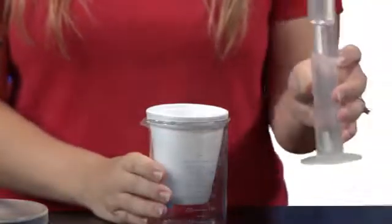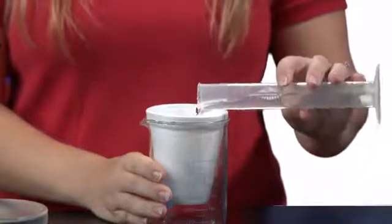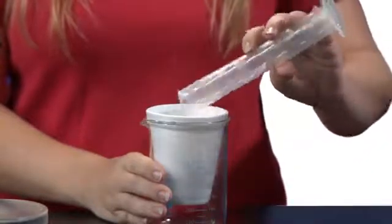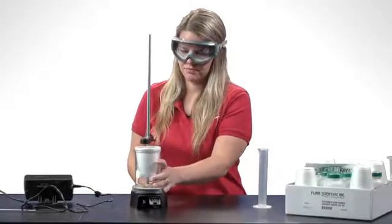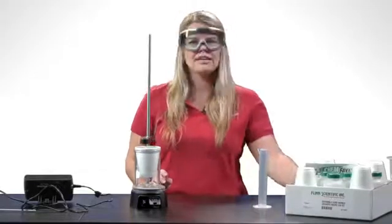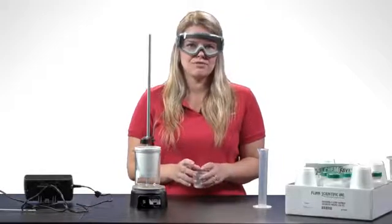Then we'll add 50 milliliters of distilled water to the cup. I'm going to place it on our stir station, and I've already accurately measured out 5 grams of magnesium sulfate.